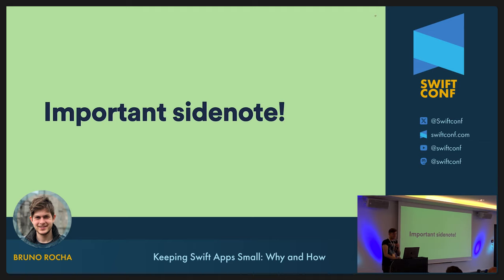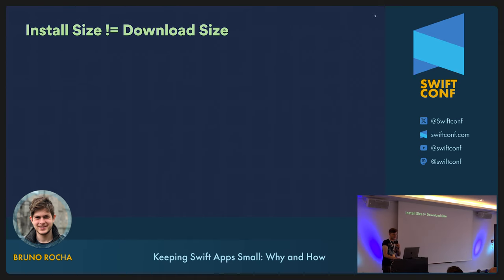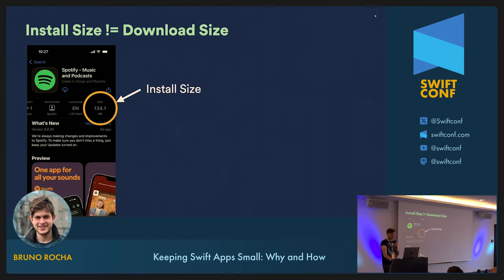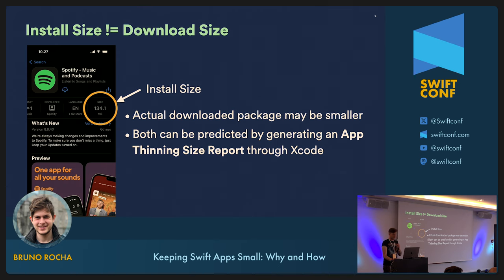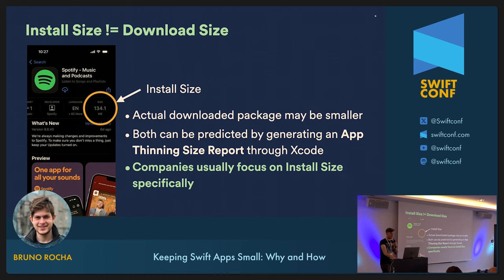The system doesn't just tell you the difference — it has the power to block pull requests if the difference is too big, keeping it away from the app until you've optimized the code. Before I continue, there's an important side note: in iOS there is a difference between install size and download size. The number you see on the App Store is the install size — the uncompressed, unencrypted size. What you actually download is generally less because Apple compresses it first. Both numbers are predictable; Apple's recommended way is to generate an app thinning size report in Xcode. When we talk about app size numbers, we mostly refer to install size, because improving install size automatically improves download size.